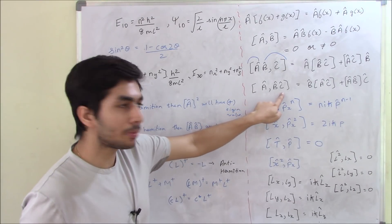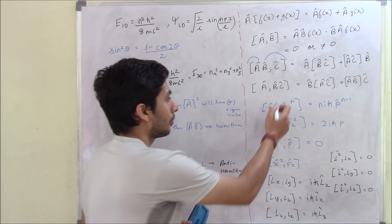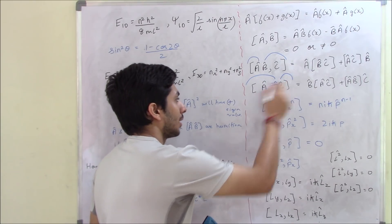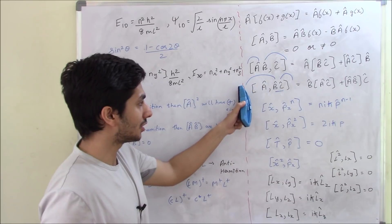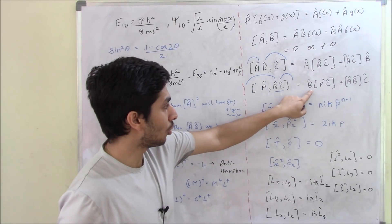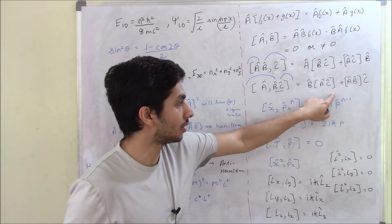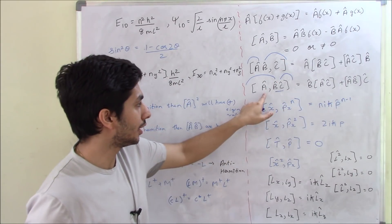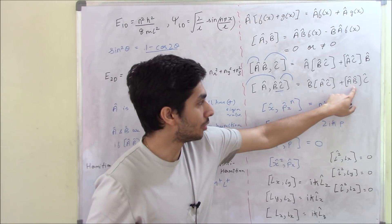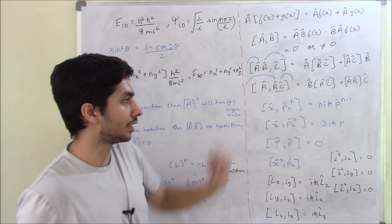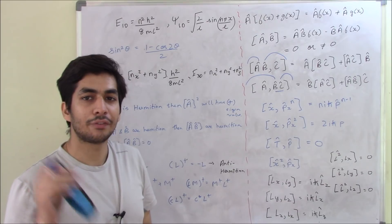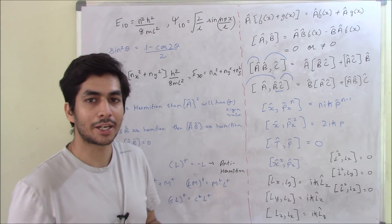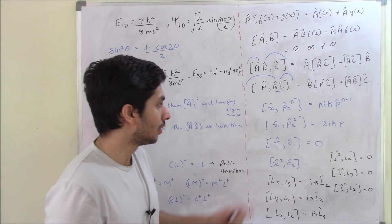Similarly, if we have [A, BC], these two operators come together. You take the left one to the extreme left and the right one to the extreme right. So we get: [A, B] times operator C plus operator B times [A, C]. This identity is very important — if you want to see questions solved using it, go to my Unacademy profile.